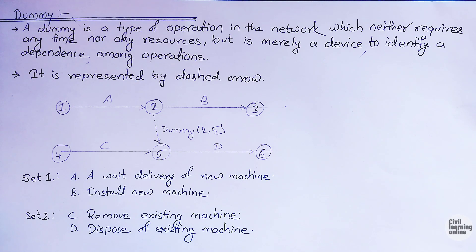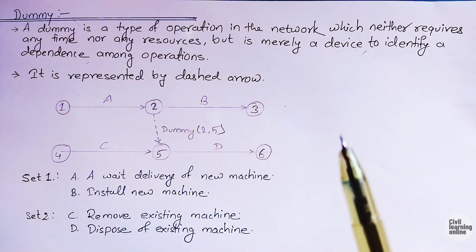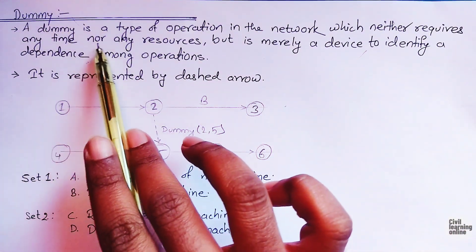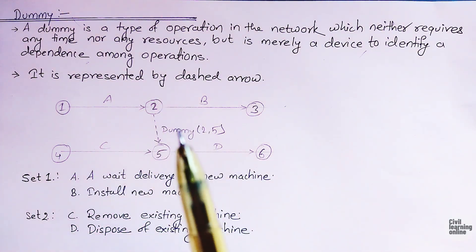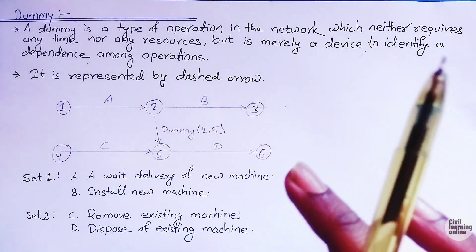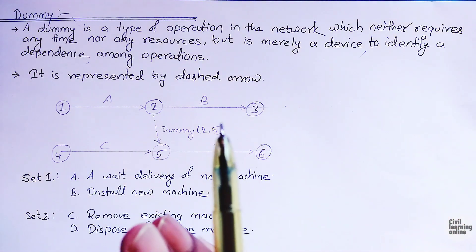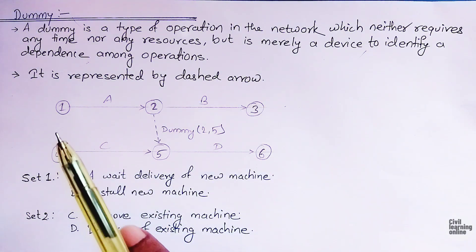In this lecture we will discuss about dummy activities in detail. In the previous video I discussed the definition of dummy activity and some basic concepts. Here we will read about it in detail. A dummy is a type of operation in the network which neither requires any time nor any resources, but is merely a device to identify a dependence among operations.